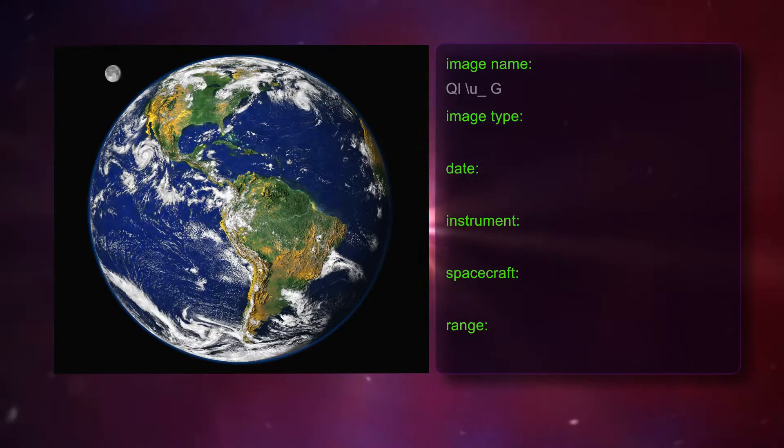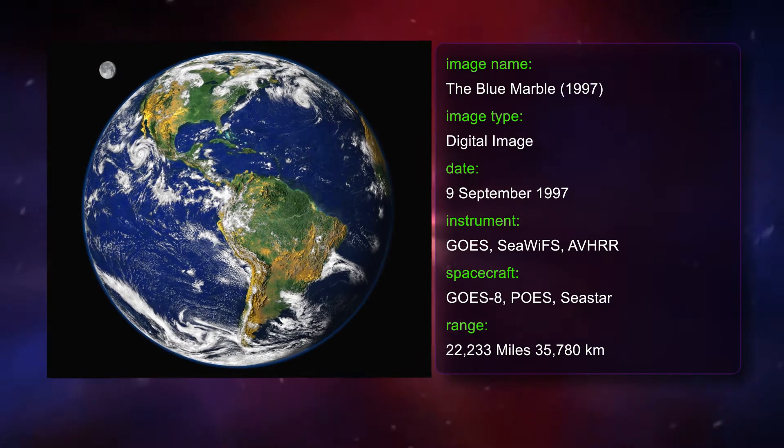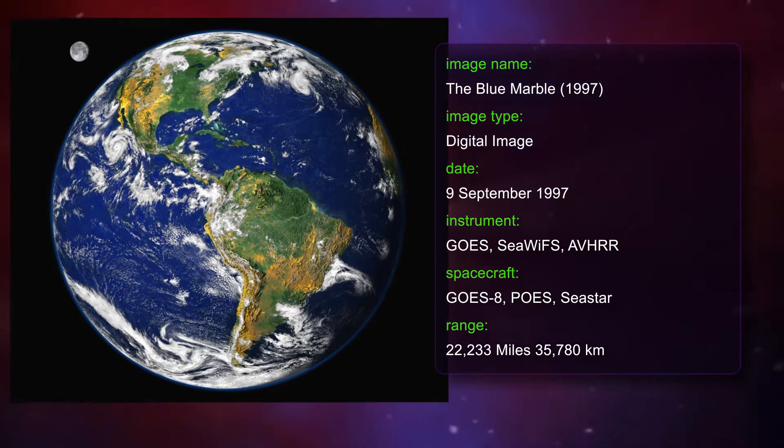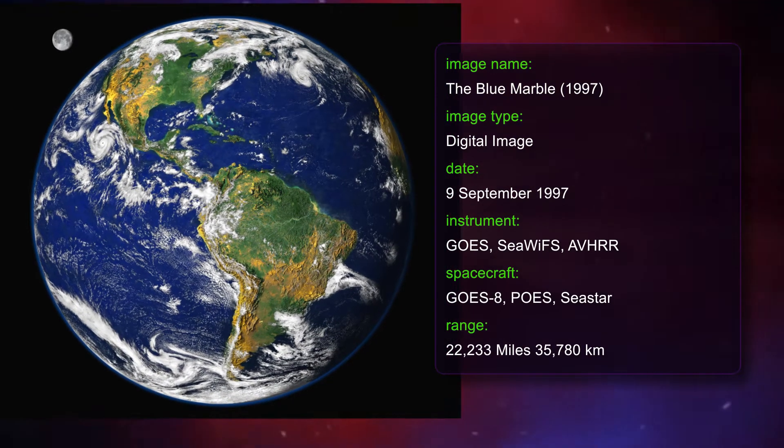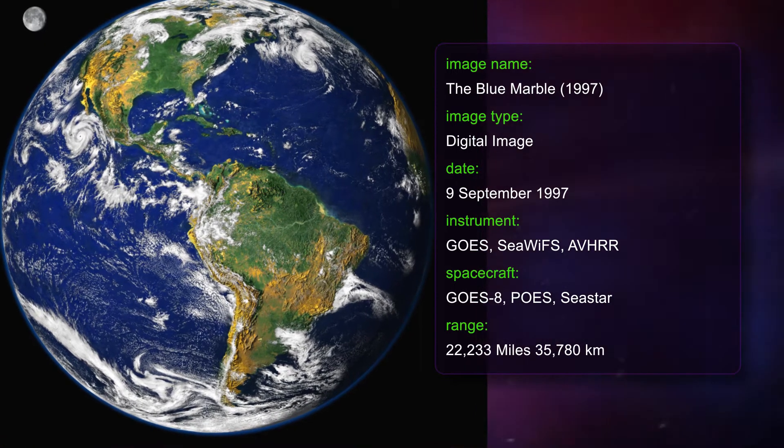This is the 1997 version of the Blue Marble. Described by NASA as a combination of science, engineering and artistry, the image was produced using data from three different satellite instruments and represents a virtual view of the Earth from 22,200 miles away.